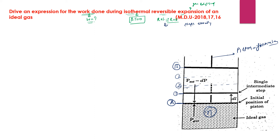To find the work done, we need to integrate pressure over the volume change from initial to final volume. For pressure during reversible expansion, the external pressure equals the internal pressure plus a small change: P_ext = P + dP. Therefore, P_ext = P − dP.